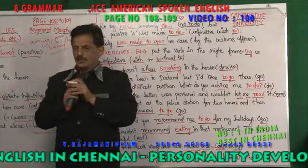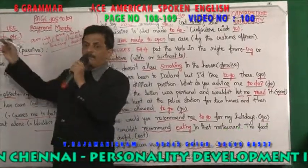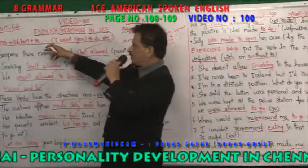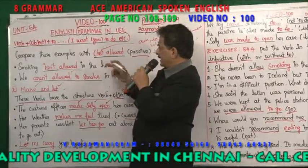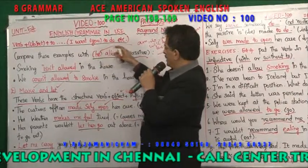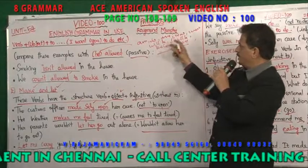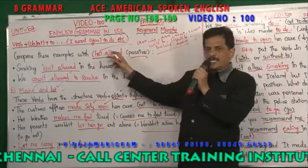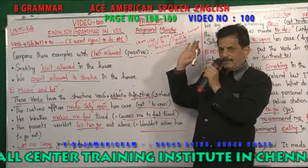So dear friends, what you understand by this concept: after verb you get object, then 'to' plus present tense verb. Then BE — am, is, are, was, were, will be, shall be, being, been — plus past participle is definitely passive voice.